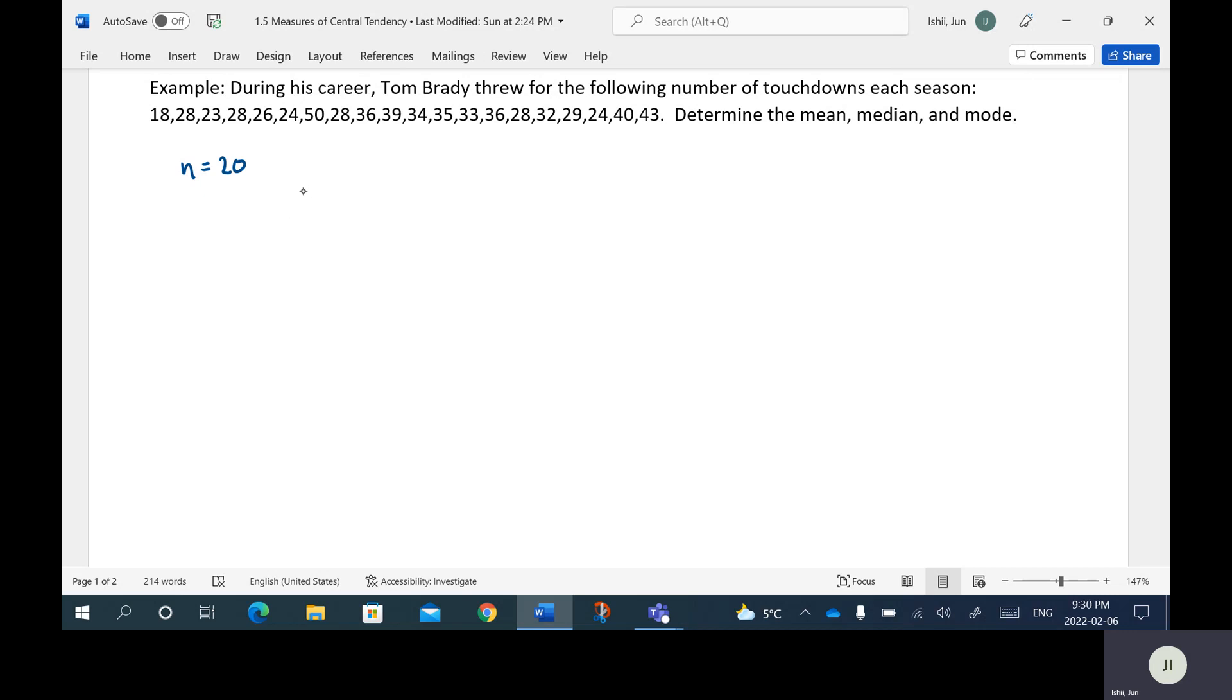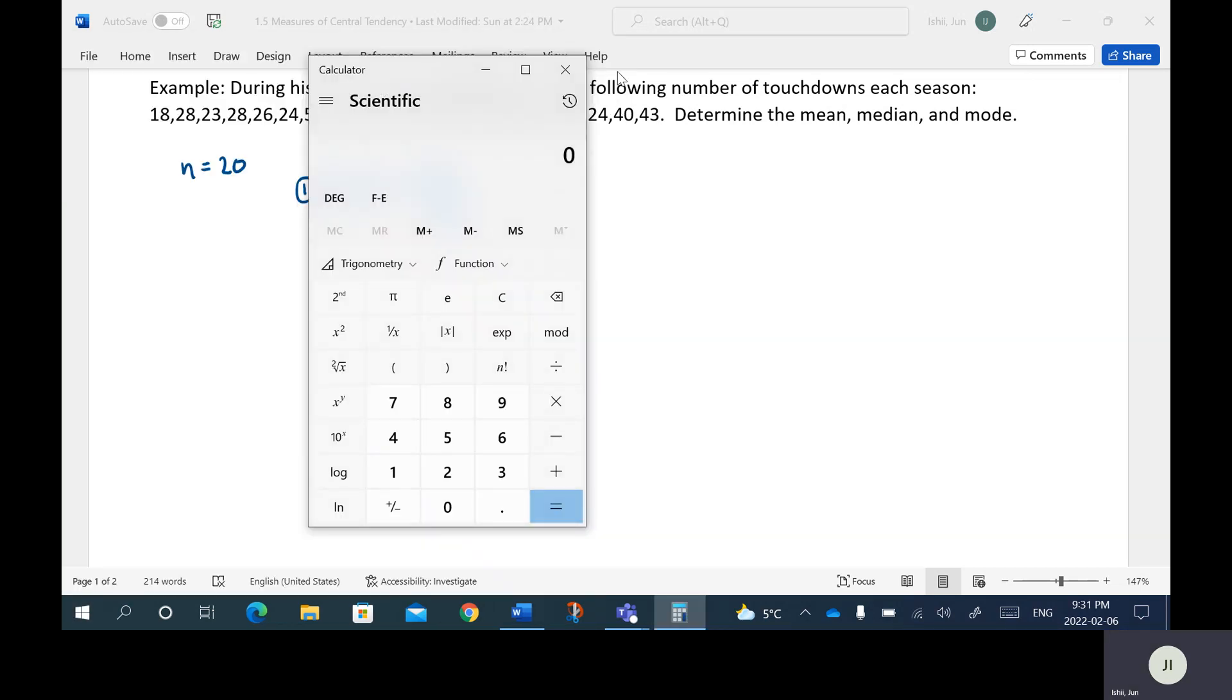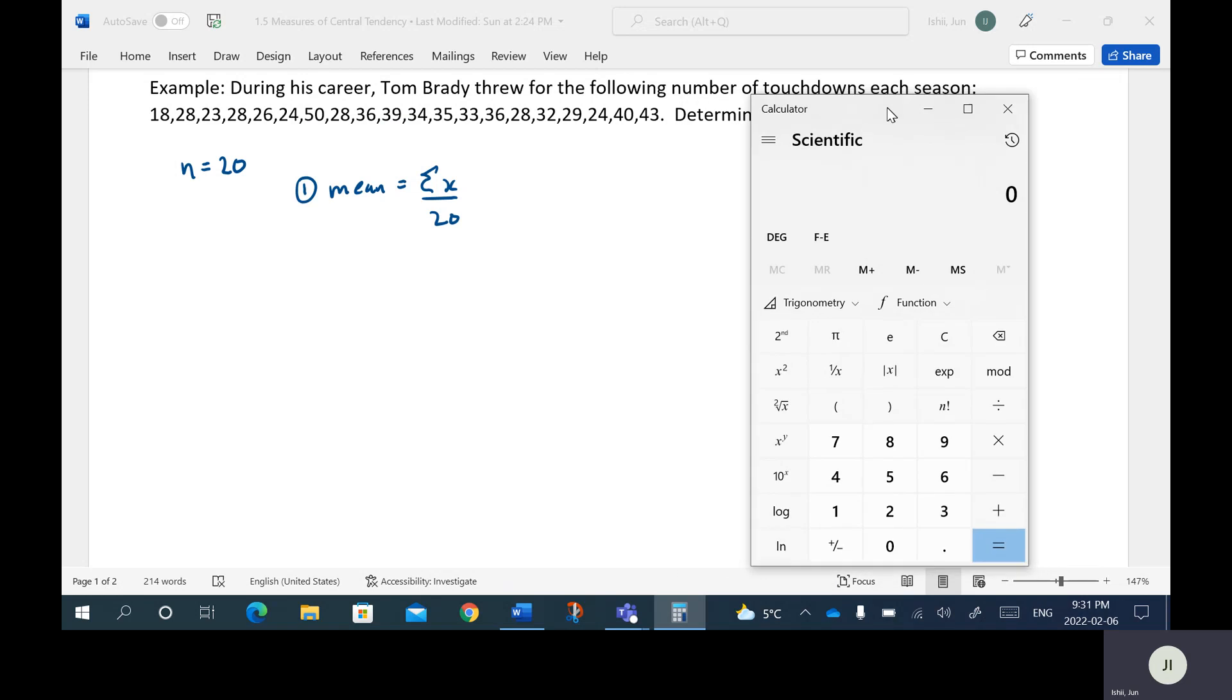So the first one here, the mean. Again, is you going to add up all of the values here and then divide by the number of values, which in this case is N. So I don't think I feel like writing it all out. So again, it's going to be adding up all the X's here and divide them by 20. So I'm not going to write that out. I'm just going to punch it in to the calculator.